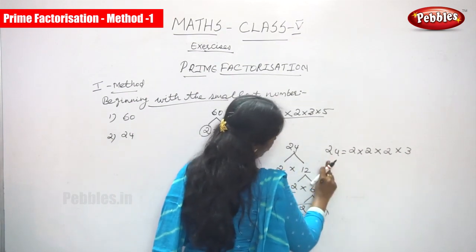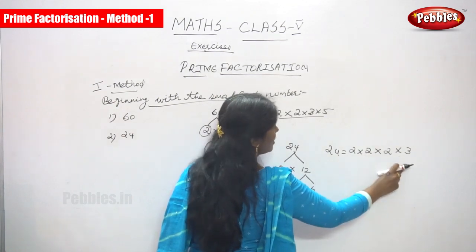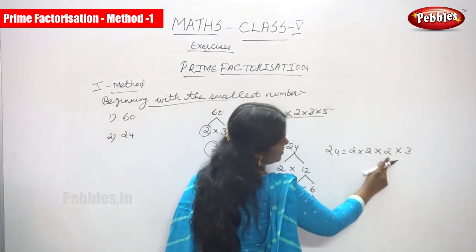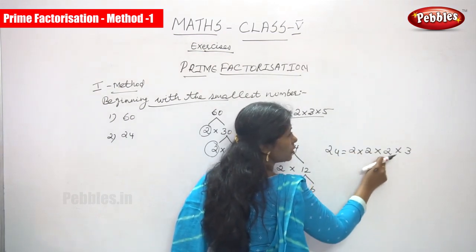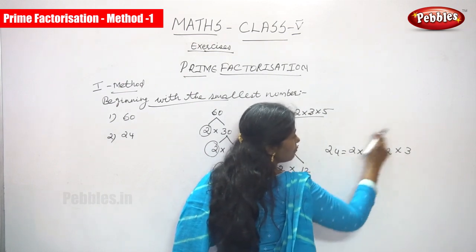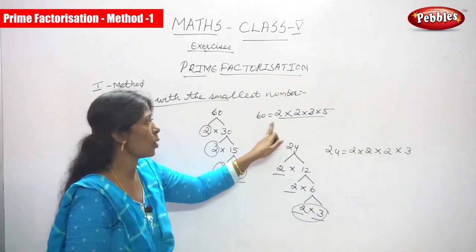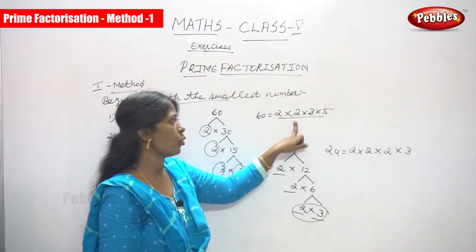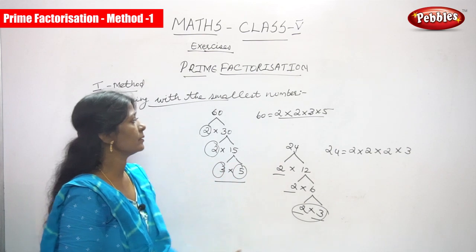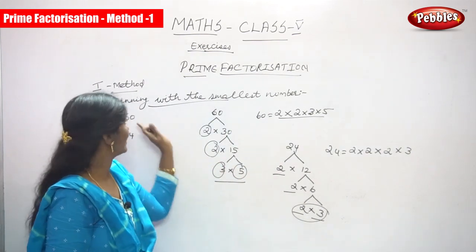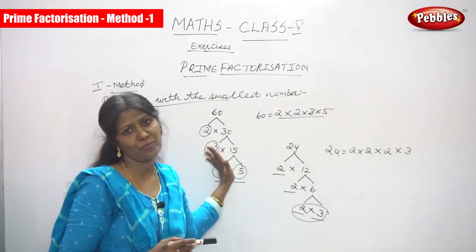So the factors of 24 are 2 into 2 into 2 into 3. All the numbers are prime numbers, so this is prime factorization. To check the answer: 2 into 2 is 4, 4 into 3 is 12, 12 into 2 is 24. So these are the prime factorization steps using the method of beginning with the smallest number. This is the first method.